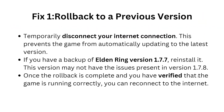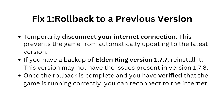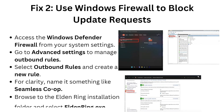The first fix is to rollback to a previous version. Simply temporarily disconnect your internet connection — this prevents the game from automatically updating to the latest version. If you have a backup of Elden Ring version 1.7.7, reinstall it, as this version may not have the issue present in version 1.7.8. Once the rollback is complete and you have verified the game is running correctly, you can reconnect to the internet.